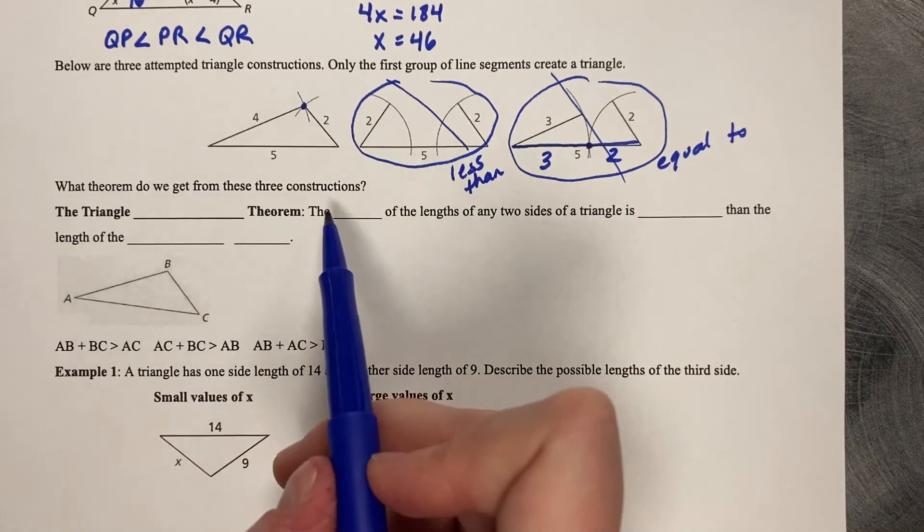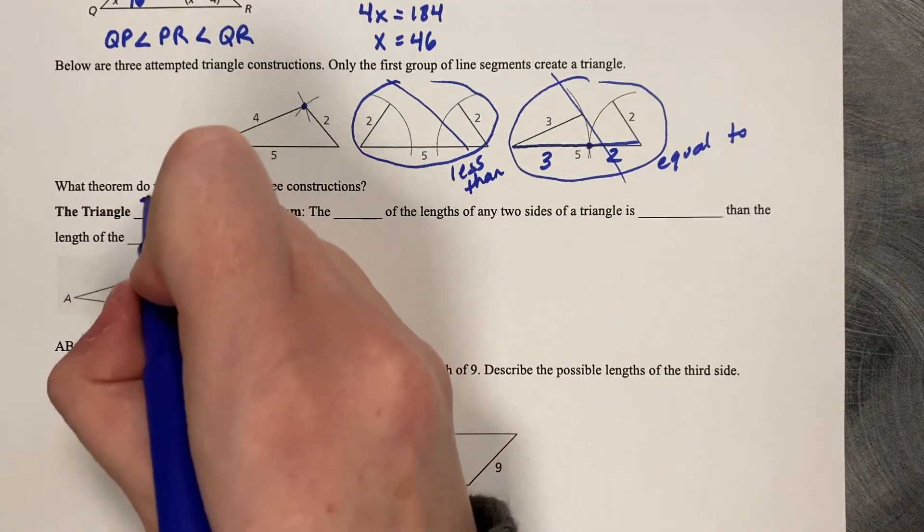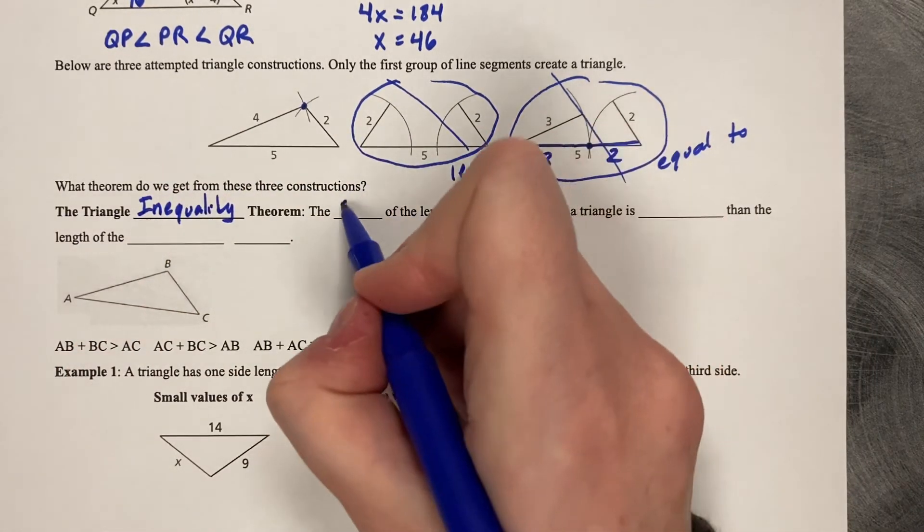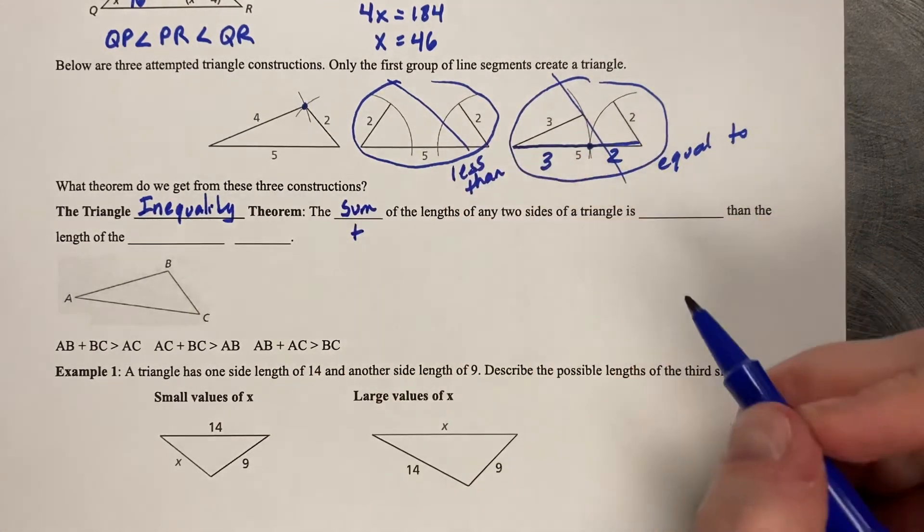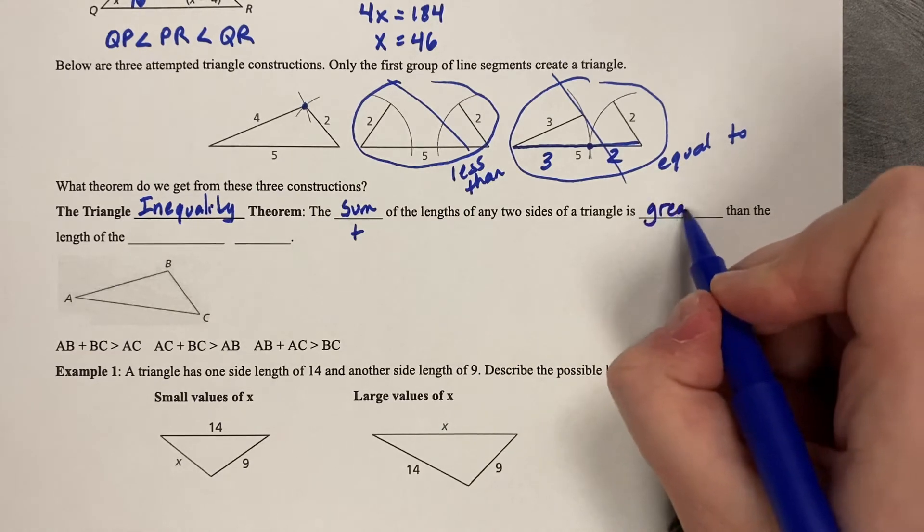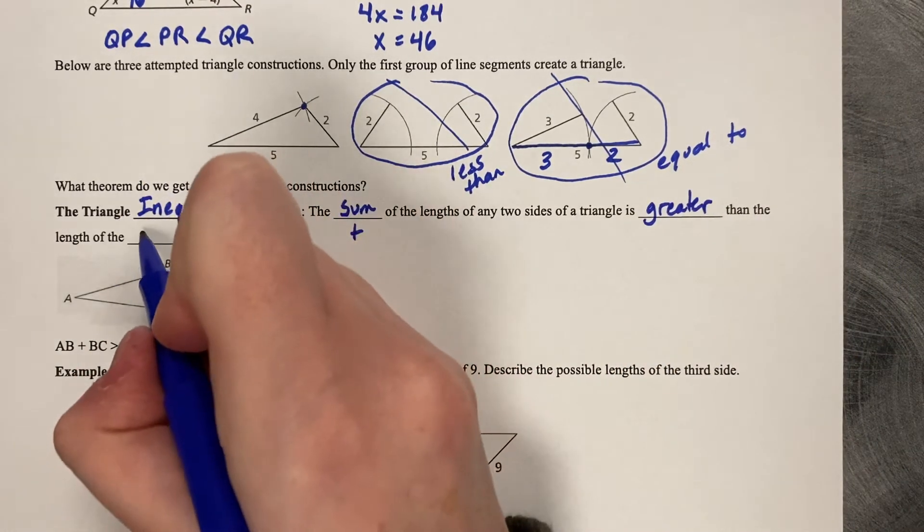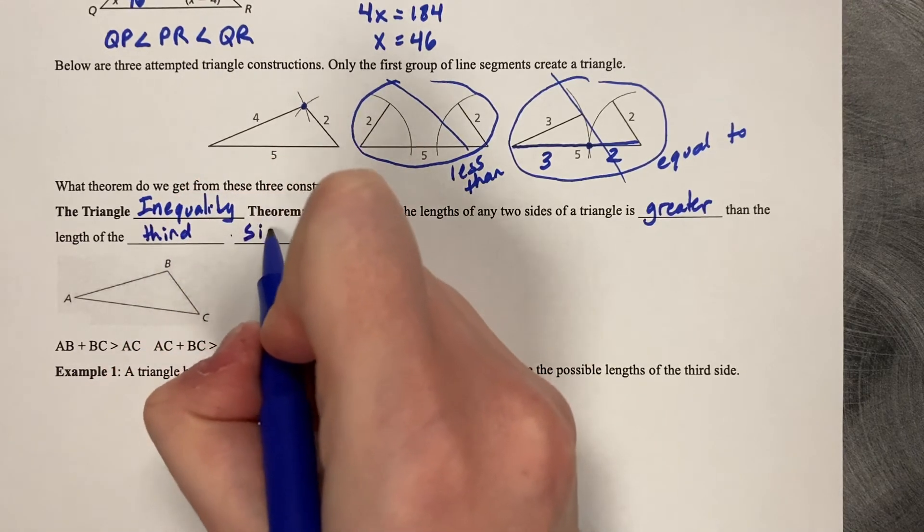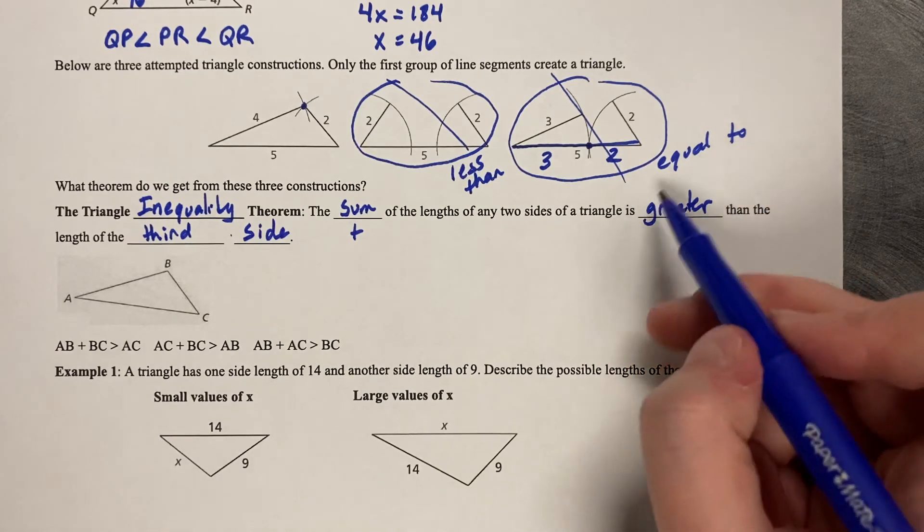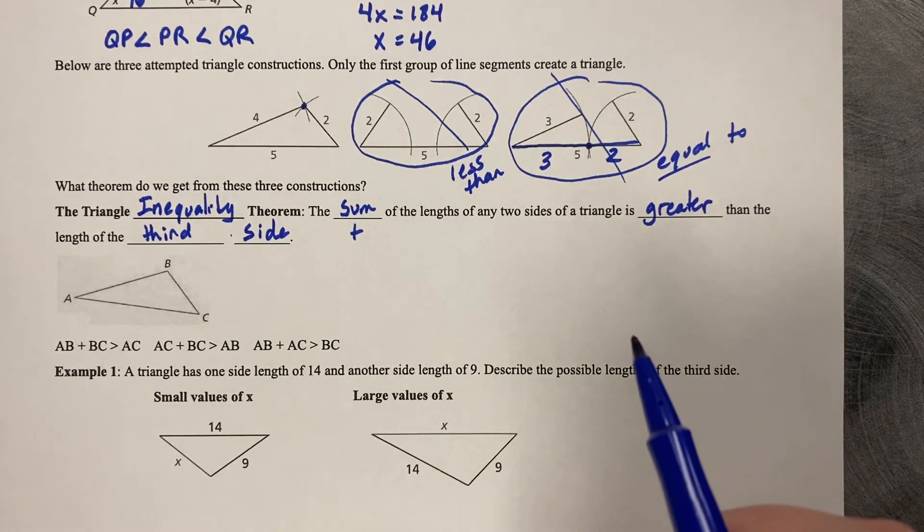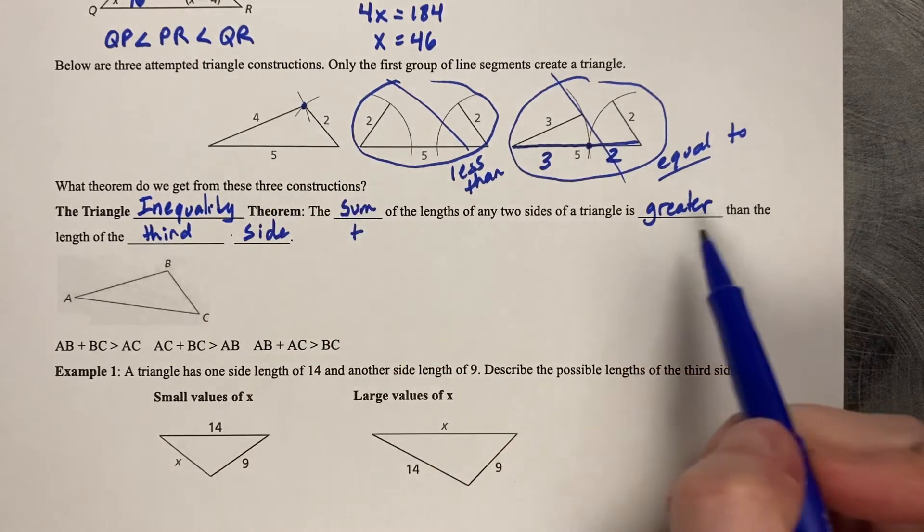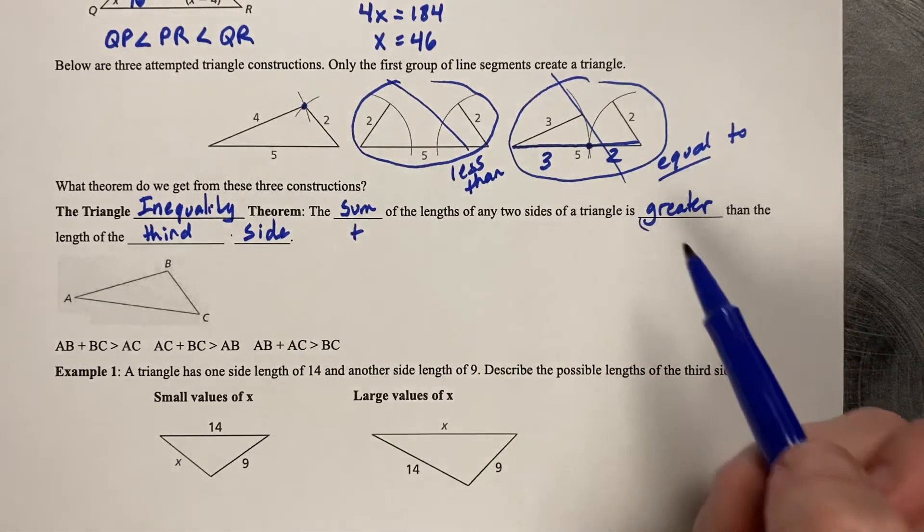So what theorem do we get from these constructions? It's called the triangle inequality theorem. If the sum or the addition of the lengths of any two sides of a triangle is greater than the length of the third side. It must be exclusively greater than. It cannot be equal to. If it's equal to, it will not make a triangle. So 4 plus 2 is 6. 6 is greater than 5. Greater than the third side length.